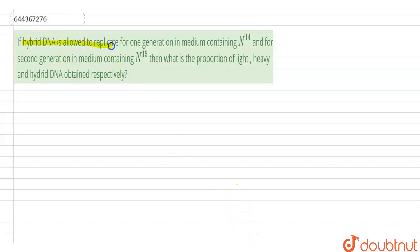If the hybrid DNA is allowed to replicate for one generation in a medium containing N14 and for the second generation in the medium containing N15, then what is the proportion of the light, heavy, and the hybrid which is obtained respectively?